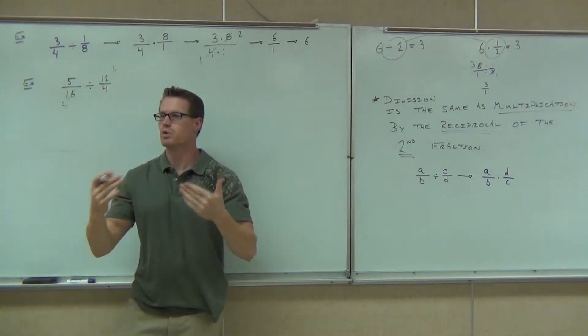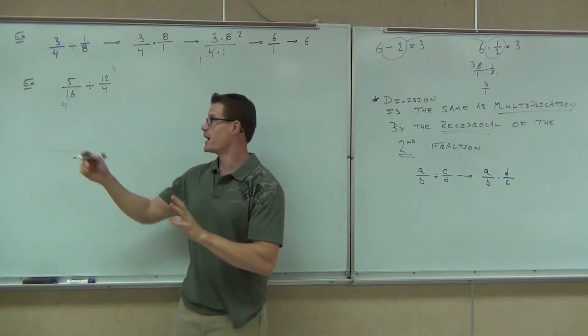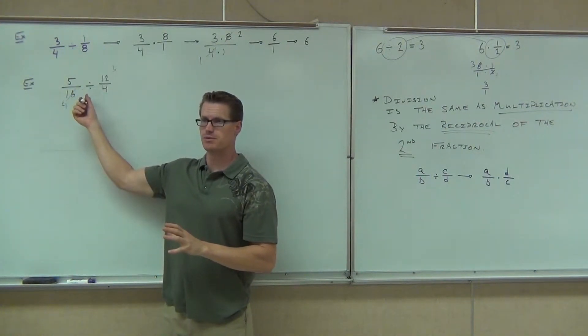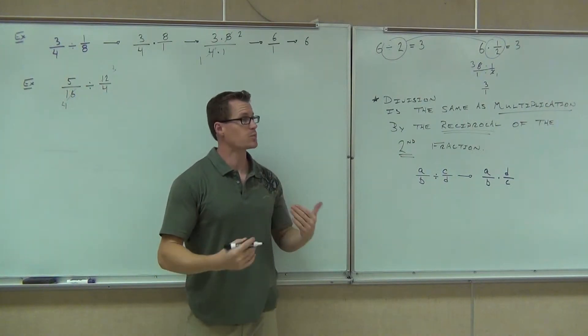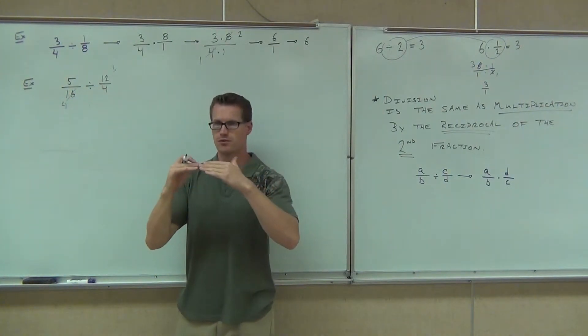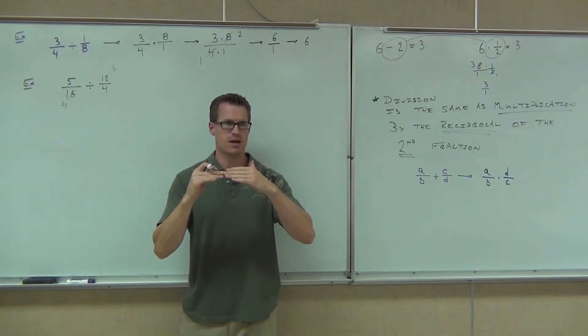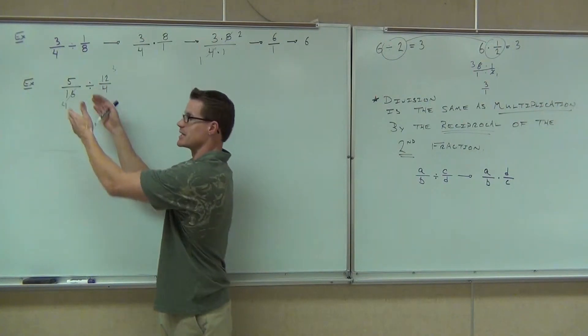You can't go ahead and just go, oh, yay, four goes into this three times, four goes into this four times. It doesn't happen. Why? Because look what you're going to do. You're actually going to flip this thing over. That 12 is no longer on the numerator anymore. Now it's on the denominator, and then you cannot cross those numbers out.